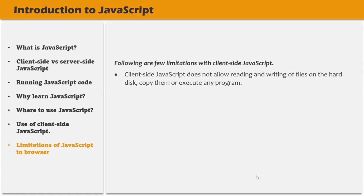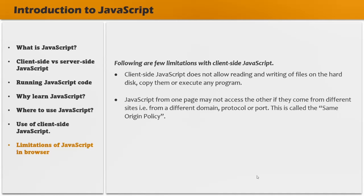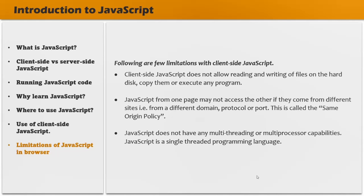There are also a few limitations with client-side JavaScript. Client-side JavaScript will not allow you to read and write files on the hard disk, copy them, or execute any program on the user's machine. Also, JavaScript from one page may not access another page if they are coming from different sites — a different domain, protocol, or port number. This is called the same-origin policy, which you will learn in detail in this course. Most importantly, JavaScript does not have multi-threading or multi-processor capabilities — it is a single-threaded programming language and cannot execute two pieces of code simultaneously.